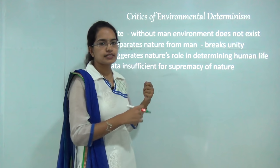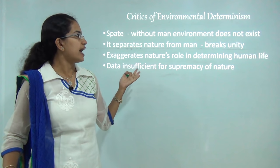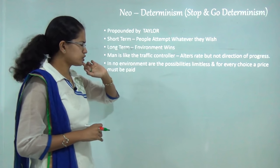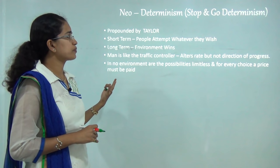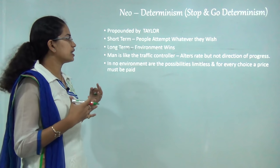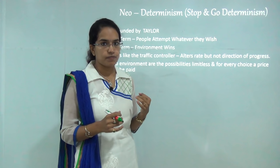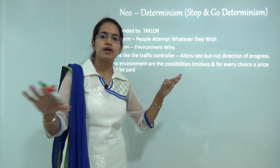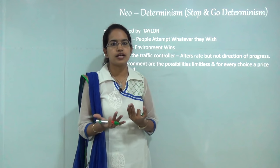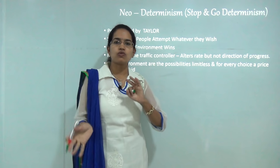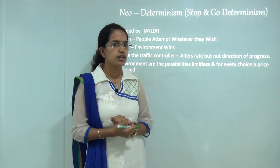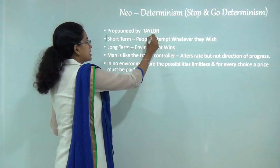Due to these drawbacks, Taylor propounded the concept of neo-determinism or stop and go determinism. He said that in the short term people aim to do what they wish to do, but in the long run environment wins the battle. In the short run we might develop a solitary area into an urban landscape, but ultimately in the long run nature would have a final say on whether this region survives or is devastated.